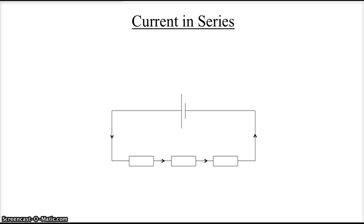In series, current is equal through all resistors. If you have 0.3 amps coming through the first resistor, then all that charge has to go through the second resistor. There's nowhere else for it to go, and likewise.